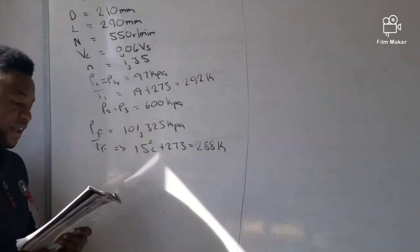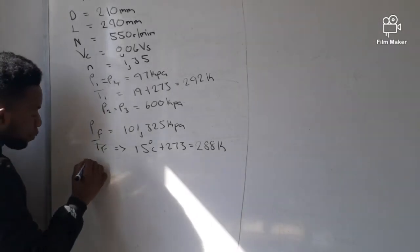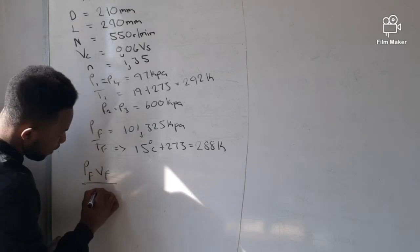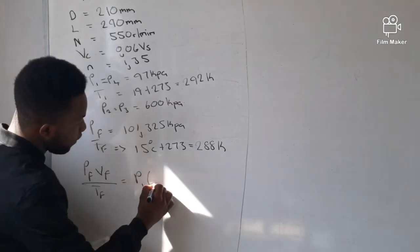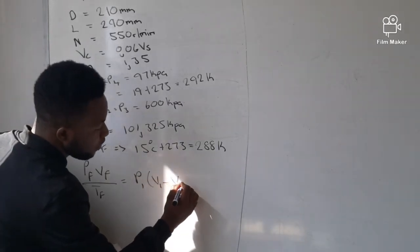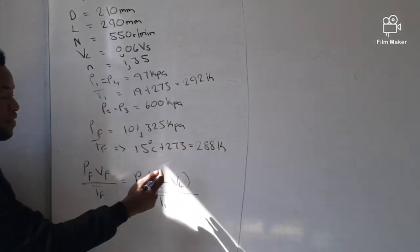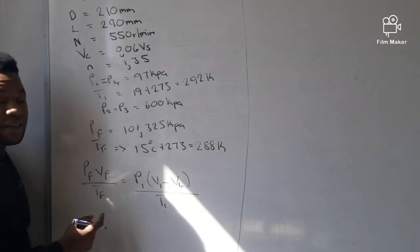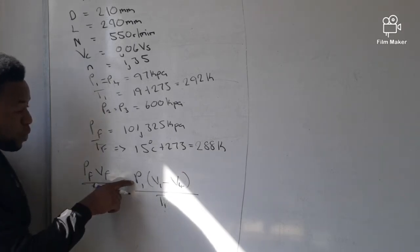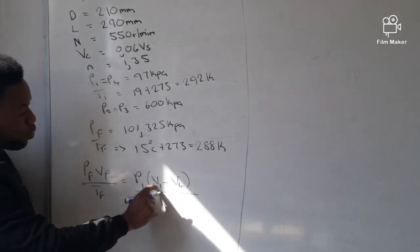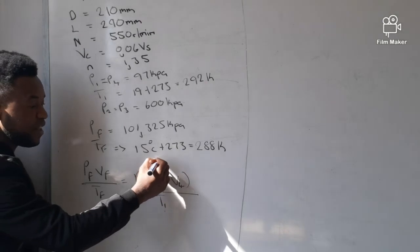The first question asks for the free air delivered in cubic meters. The formula is: Pf × Vf / Tf = P1 × (V1 − V4) / T1. We are looking for Vf, and we have Pf, Tf, P1, and T1, but we need V1 and V4. Note that V1 − V4 is the same as the effective volume Ve. So we need to calculate the effective volume first.